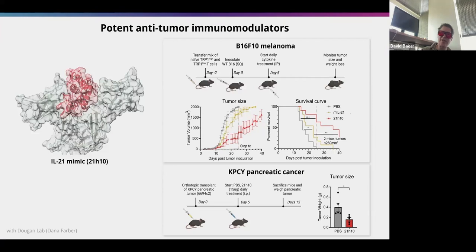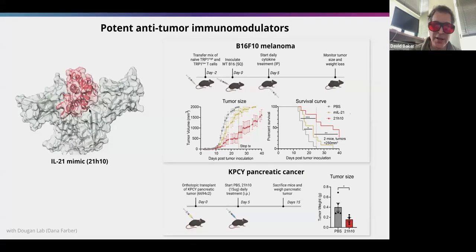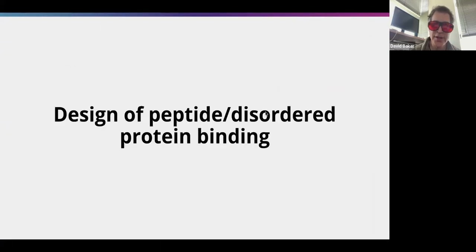We can use this design process to make proteins that are very effective in animals — in vivo models — in this case for cancer. In a fairly stringent cancer model in mice, the mice that received this designed protein live significantly longer than mice that don't. We're excited about designed proteins as cancer therapeutics.